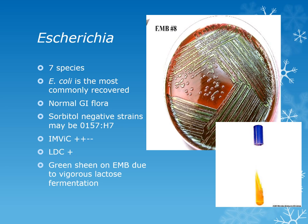IMViC is an acronym that stands for Indole, Methyl Red, Voges-Proskauer, and Citrate. For Escherichia, it is positive for Indole, positive for Methyl Red, negative for Voges-Proskauer, and negative for Citrate. They are lysine decarboxylase positive, and you can see a green metallic sheen on EMB due to vigorous lactose fermentation. EMB only has lactose in it, and if you have a vigorous lactose fermenter it will be metallic green — most commonly with E. coli.